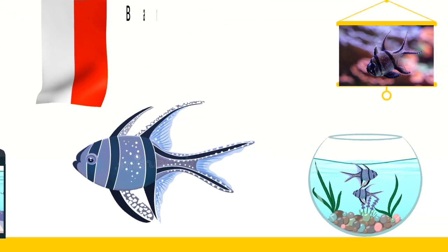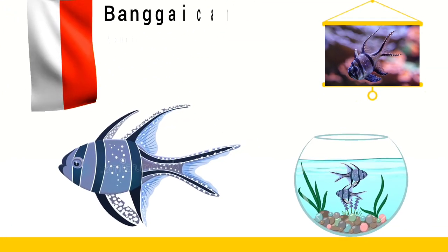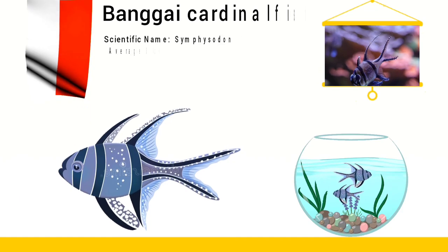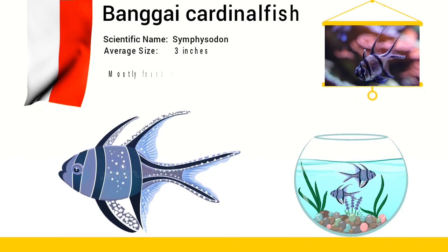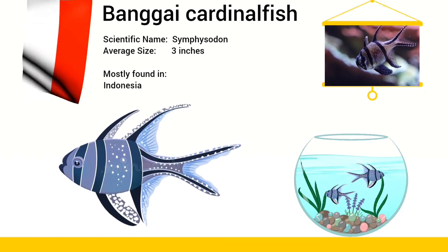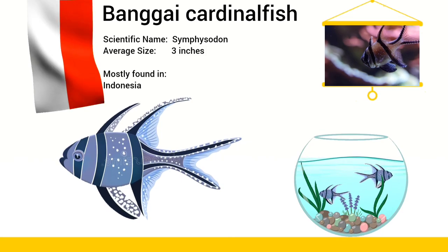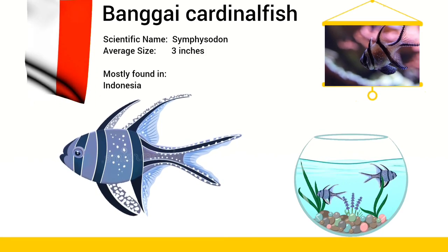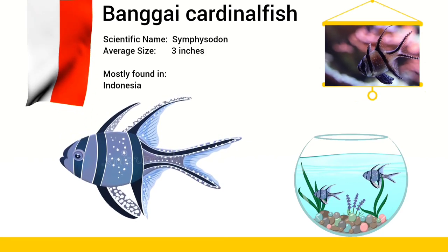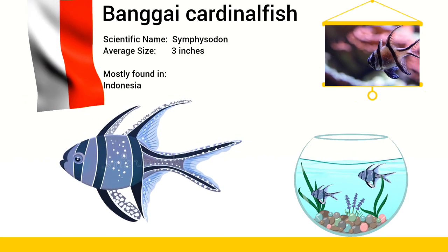It is found only in designated regions around the coasts of 33 islands in the Bay of the Indian Ocean. It is a high archipelago and island group in Indonesia.